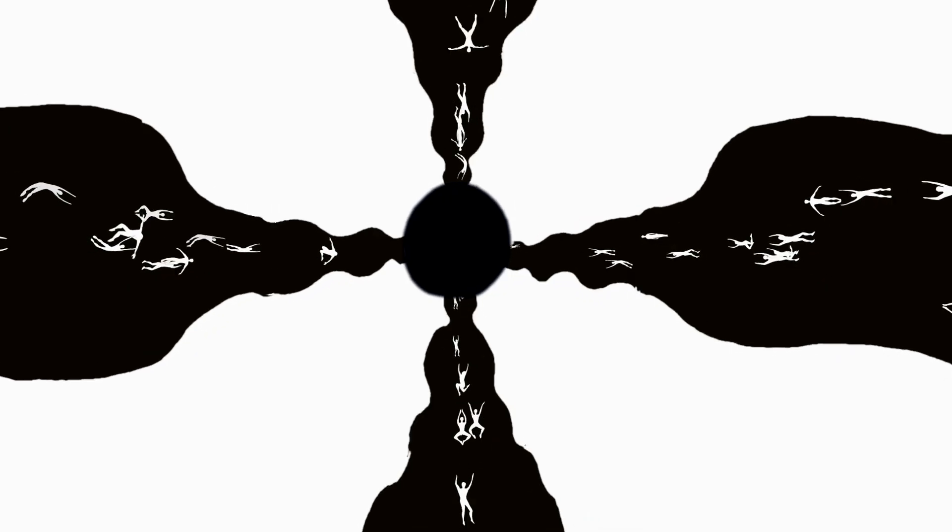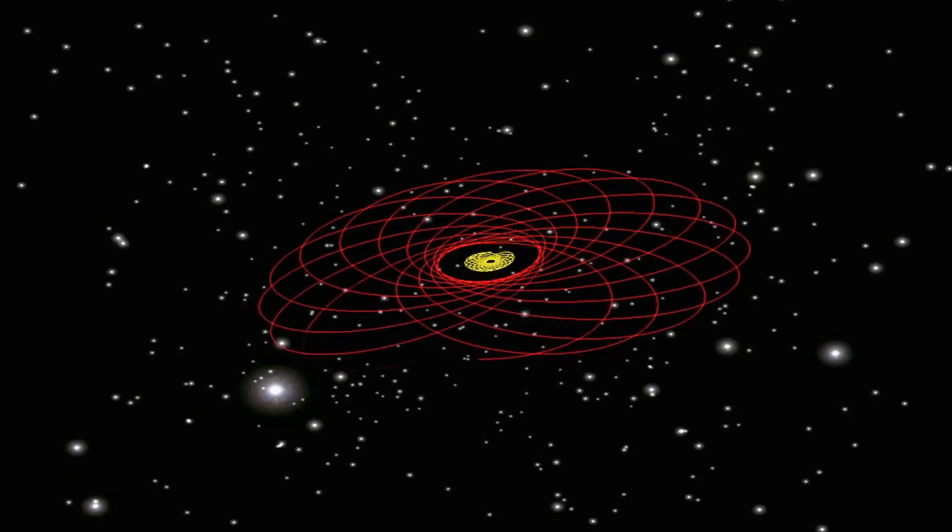How do we actually come to know about unobservable entities? What sorts of things could we possibly know about the world?